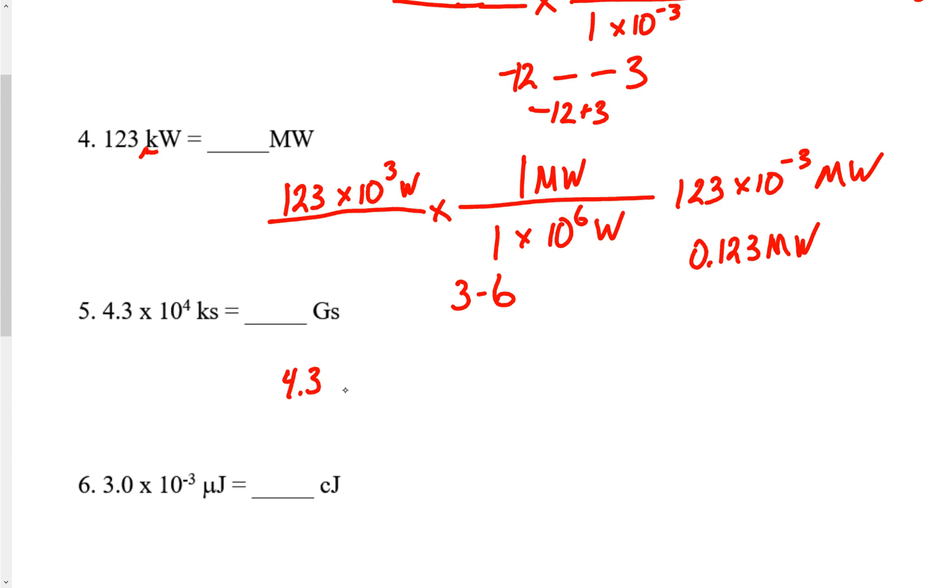This is interesting. How do you handle this? You've been given 4.3 times 10 to the 4 kiloseconds. What's kilo mean? 10 to the 3. So 10 to the 4 and 10 to the 3, we're combining these two exponents together. We would write 4.3 times 10 to the 7 seconds. We're converting to gigaseconds. 1 giga is 10 to the 9. So 7 minus 9 is negative 2. Your answer is 4.3 times 10 to the negative 2 gigaseconds.